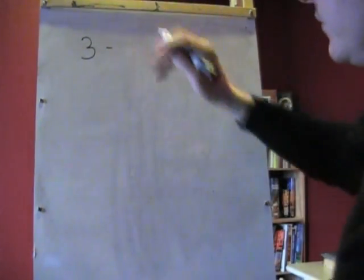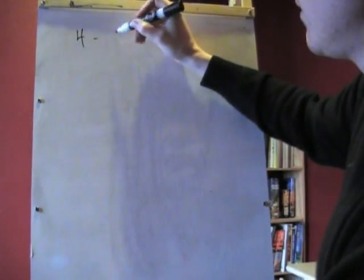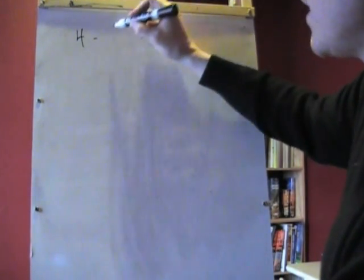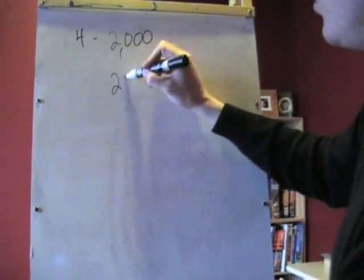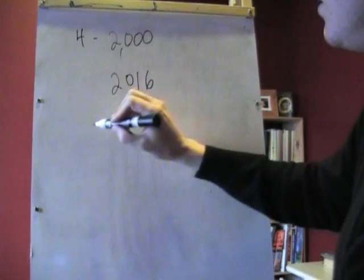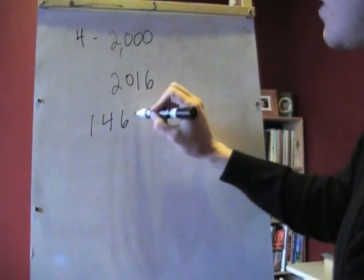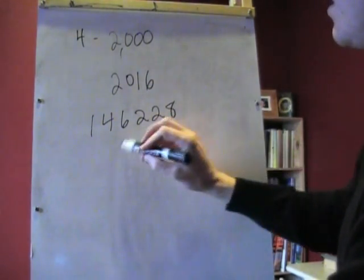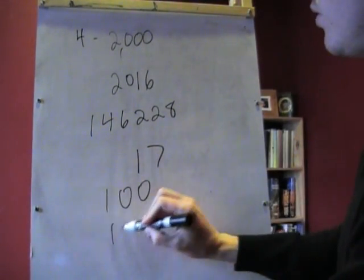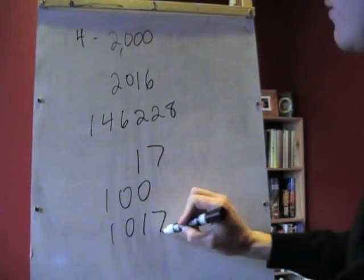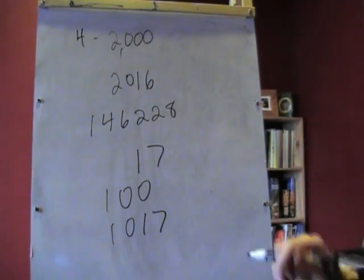Next one is number 4. If you want to check and see if a number is divisible by 4, you have to look at the last two numbers of that number. So, let's say, for example, you have like 2000, 2016, 146228, and like 1700, 1017.